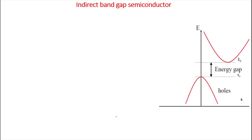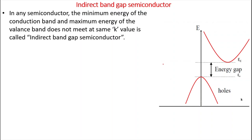Now we'll move to indirect bandgap semiconductors. This is the E versus k diagram for indirect bandgap semiconductors. By observing the diagram you will notice the difference — in any semiconductor, if the minimum energy of the conduction band and maximum energy of the valence band do not occur at the same k value, then that is called an indirect bandgap semiconductor.